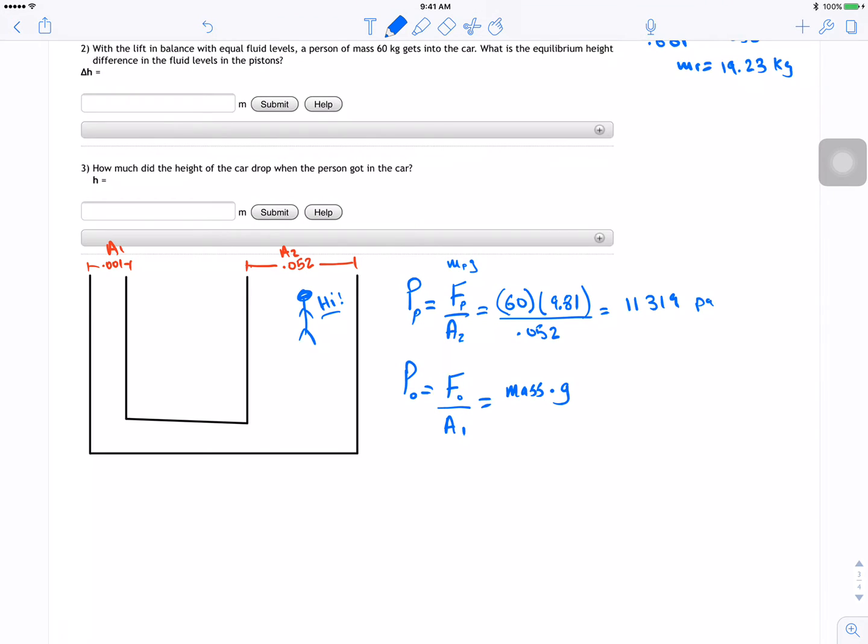And if you go to mass, mass is the same as density times volume. And volume is just height times area.